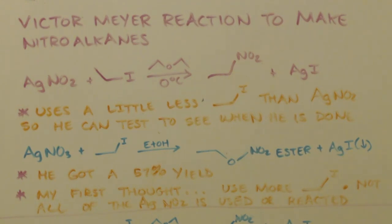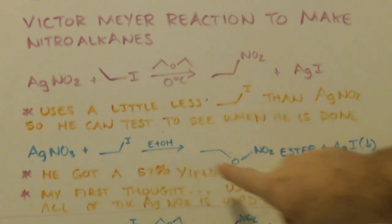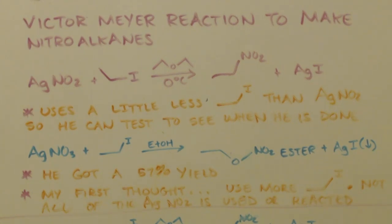This way, there's less ethyl iodide, so it's definitely going to be used up, and he can take a little sample out of the reaction pot and do this reaction where he makes an ester. It's going to get some silver nitrate and some ethanol, and if there's any ethyl iodide in there, it will make an ester, a nitrate ester, and also silver iodide, which will precipitate out. So when he tests it, if anything precipitates out, he knows there's still ethyl iodide in there, and the reaction isn't done.